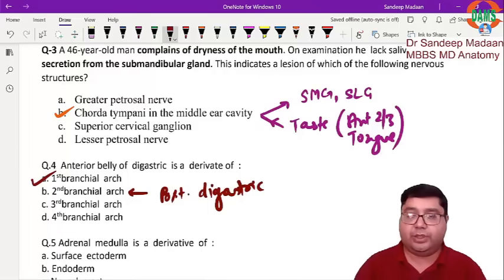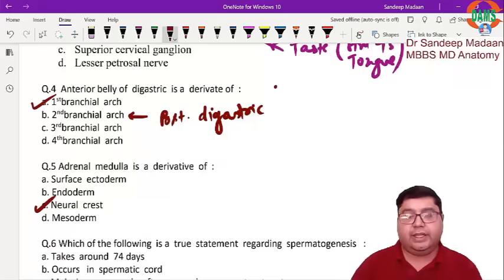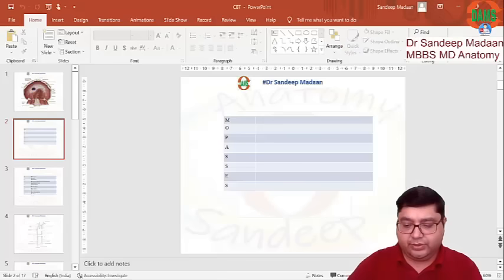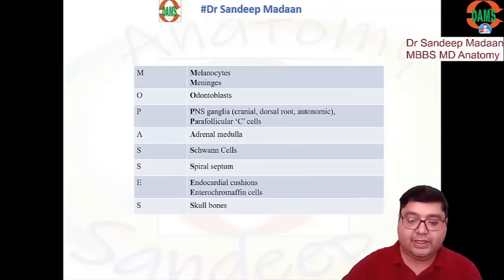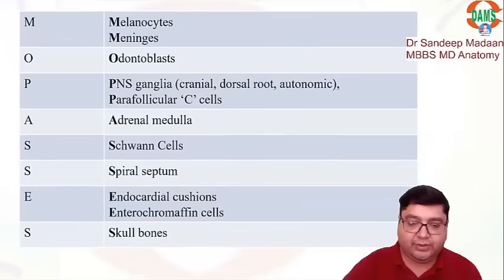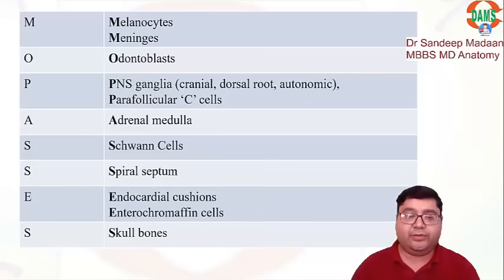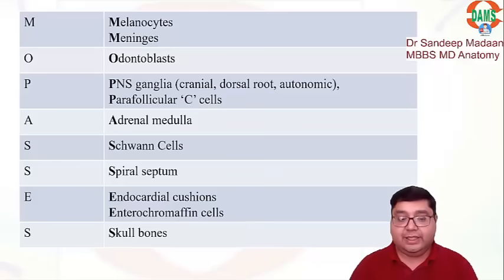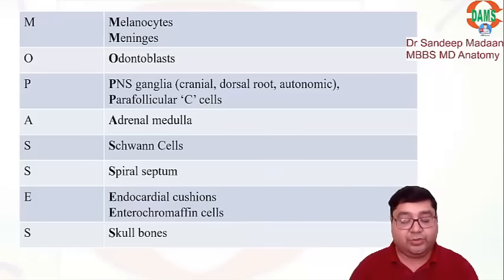Next question: the adrenal medulla is a derivative of neural crest cells. We should also know the other derivatives of neural crest cells, which can be remembered by the mnemonic 'Mo Passes': melanocytes, meninges, neuroblasts, PNS ganglia (dorsal root, cranial, parasympathetic), C cells, adrenal medulla, Schwann cells, spiral septum, endocardial cushions, and skull bones.